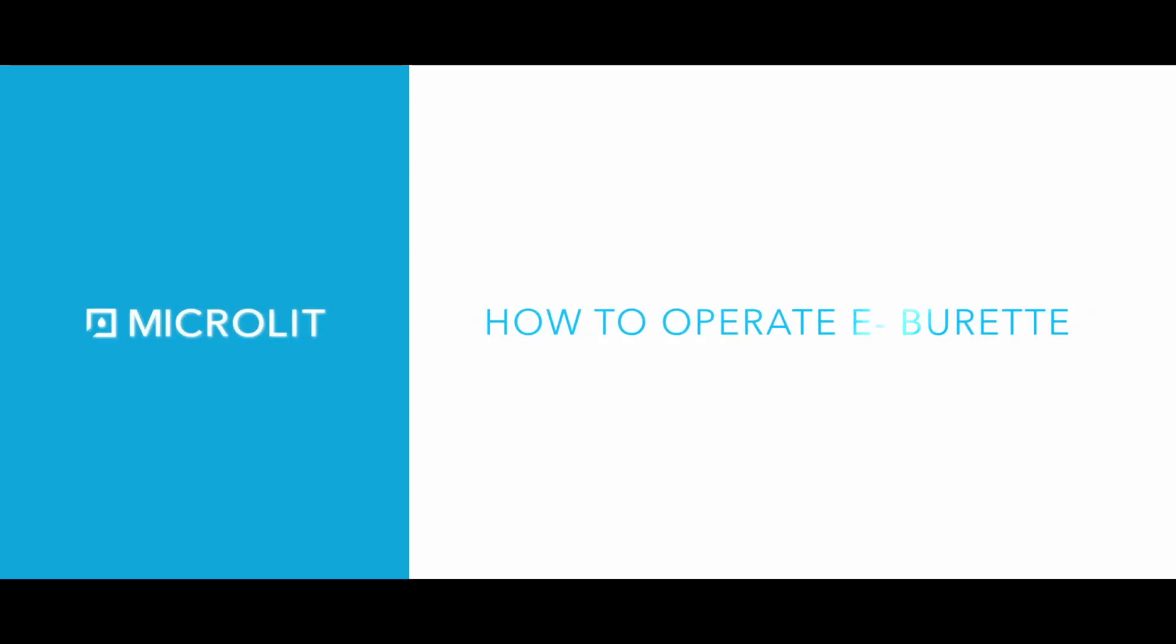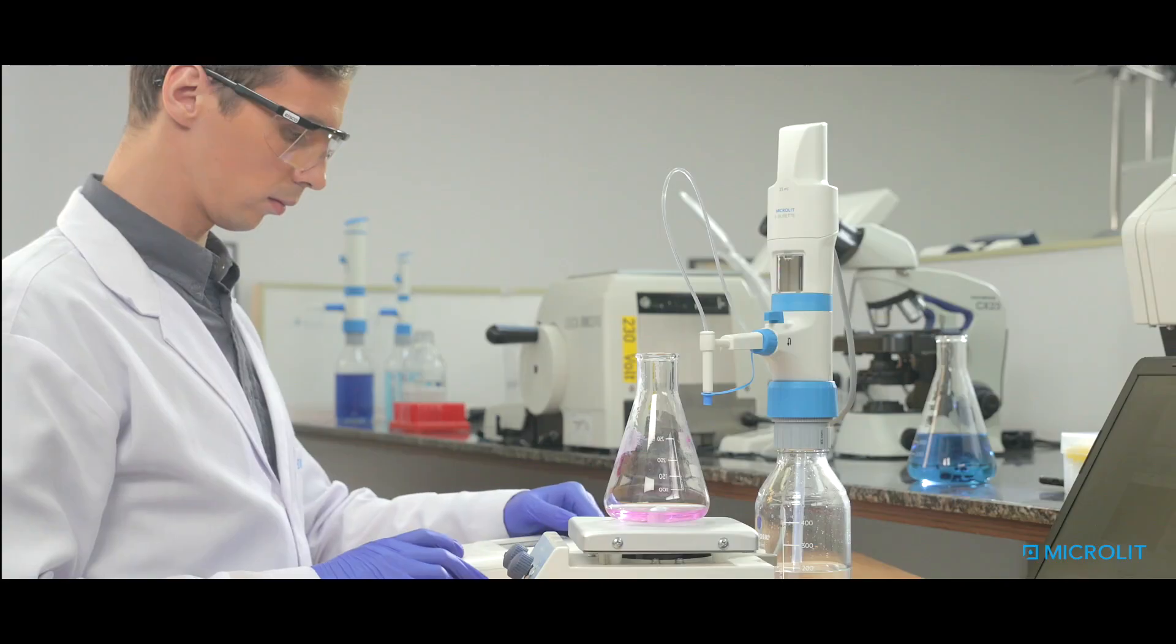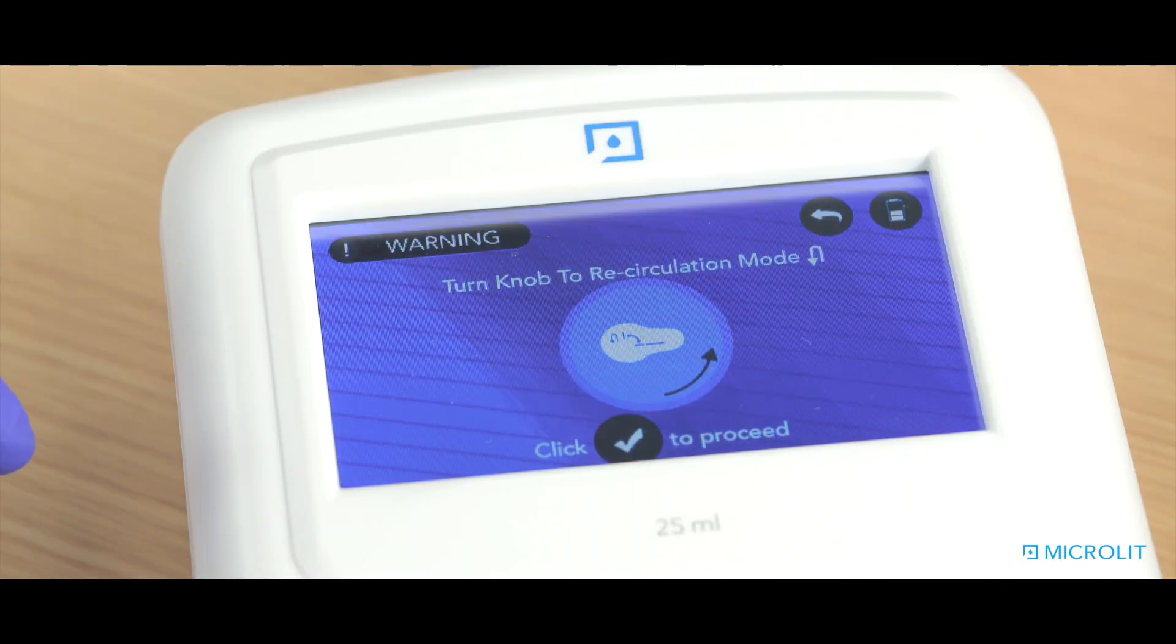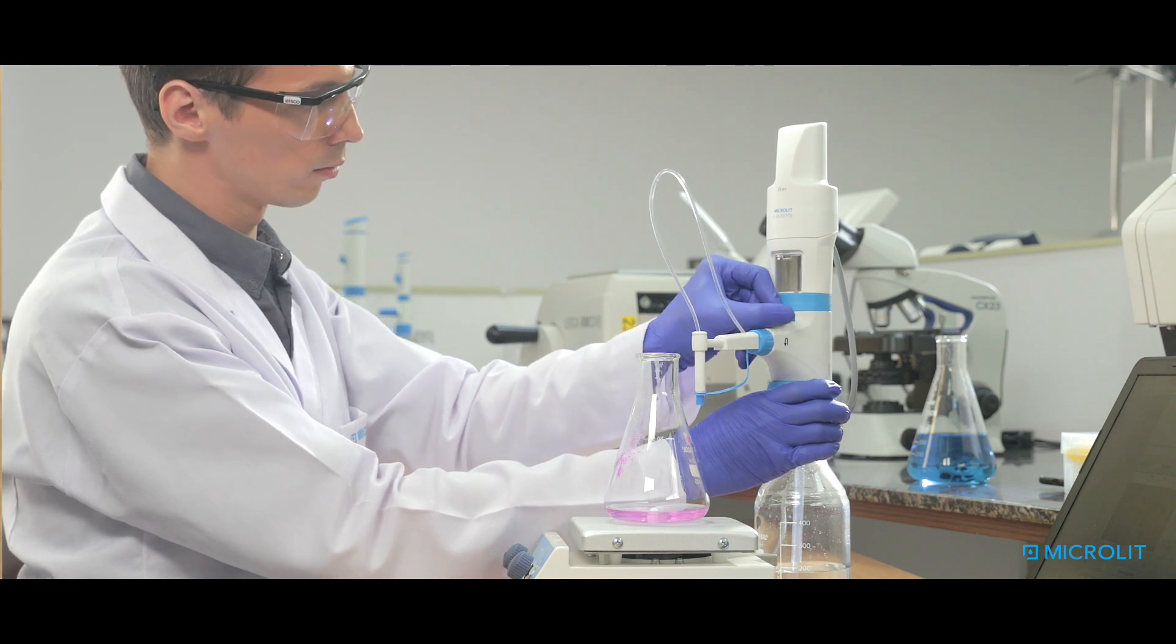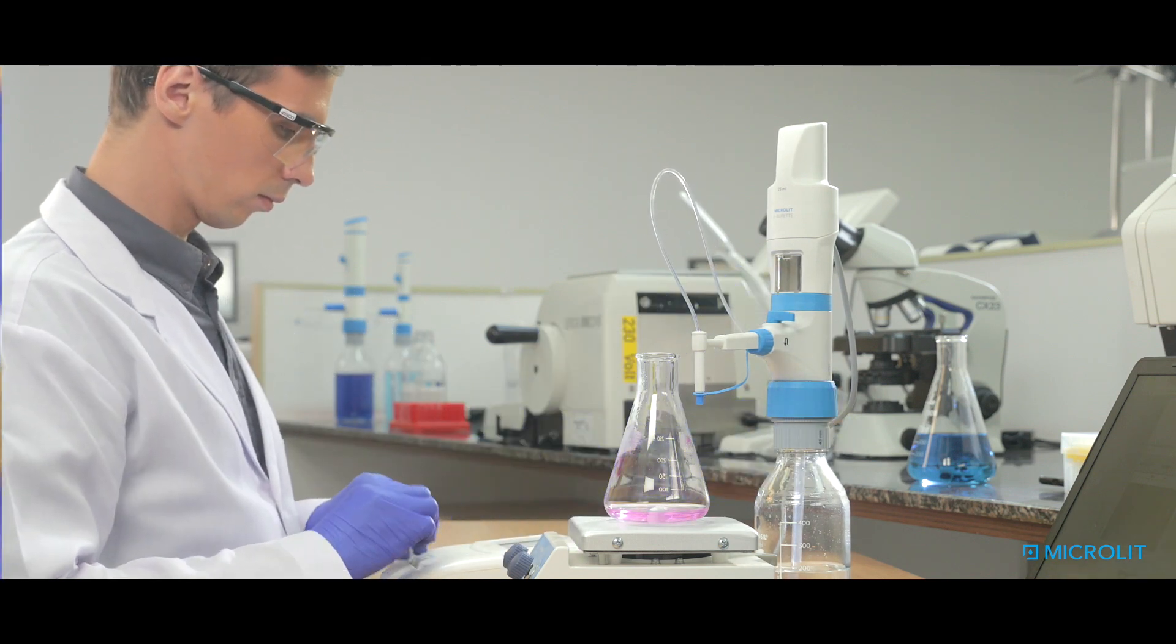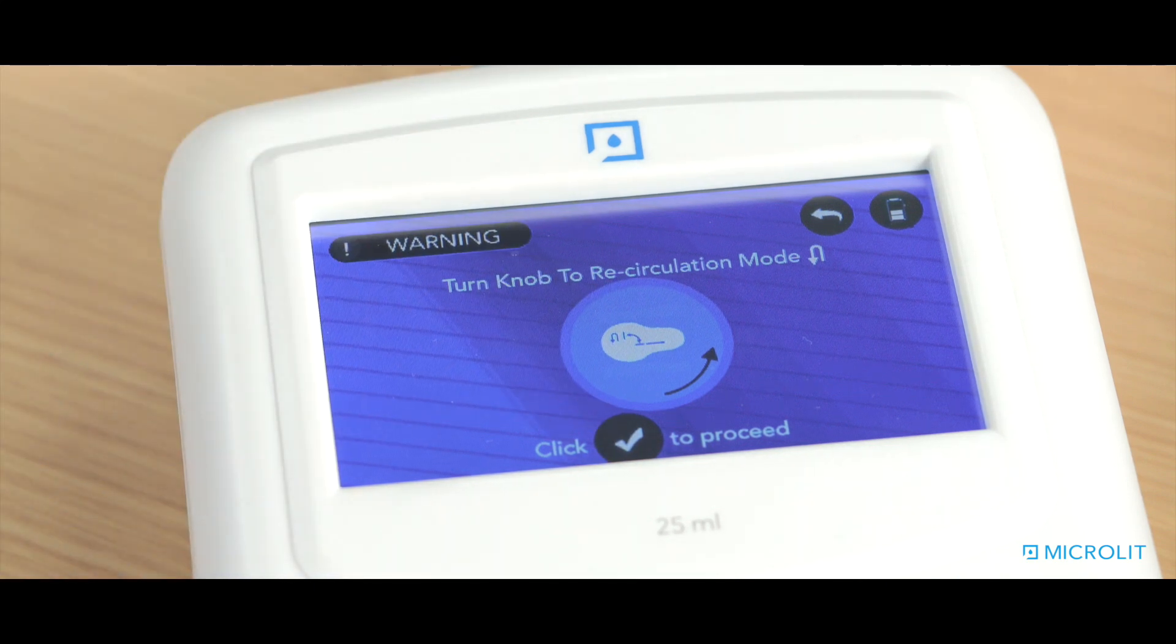How to operate the Microlit eBuret: press the ON button. When it boots, the instrument warns to turn the knob to the recirculation mode and touch the tick mark when ready. The eBuret will reset automatically and is now ready to use.